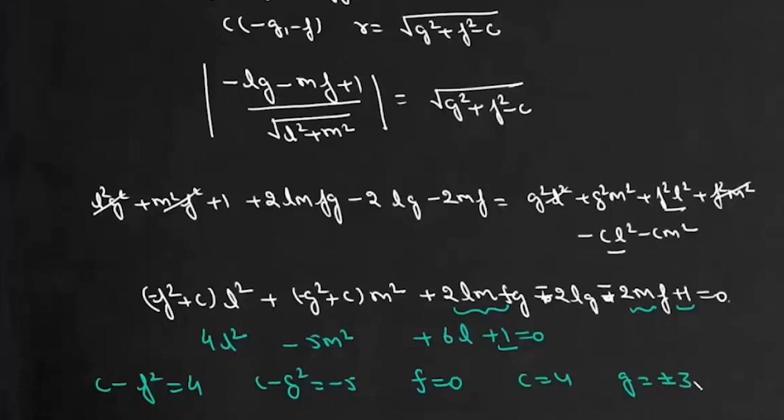Now we compare 6l with -2gl. We get g as -3, so the value of g is -3.